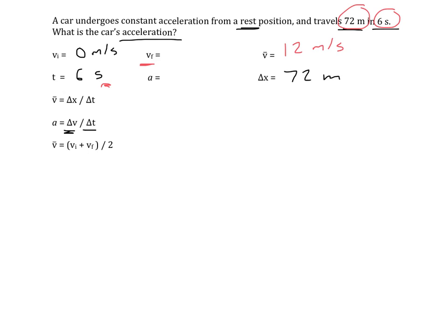So, from that, we can get our final velocity, because if you remember, the average speed is just the average of the initial and the final. So the average of what speed with 0 gives you 12 meters per second. And you can use this equation if you prefer to actually plug in.